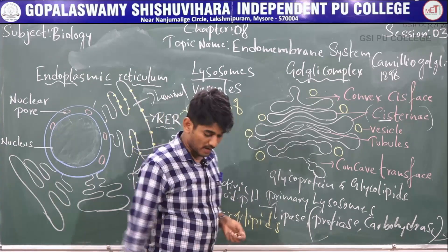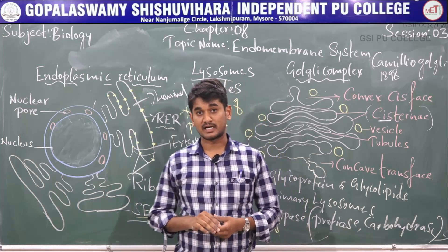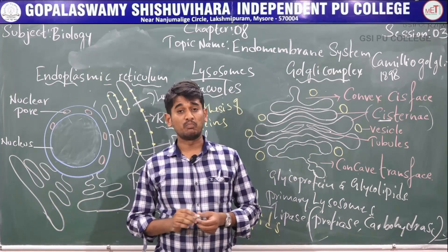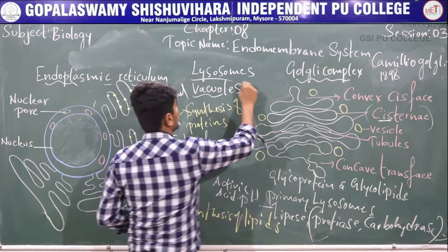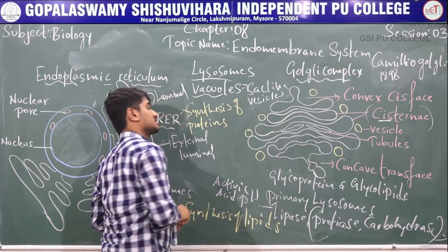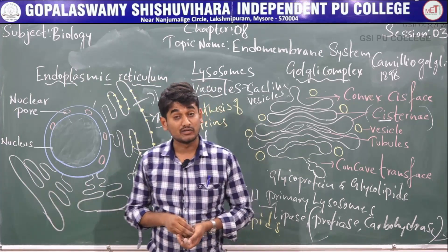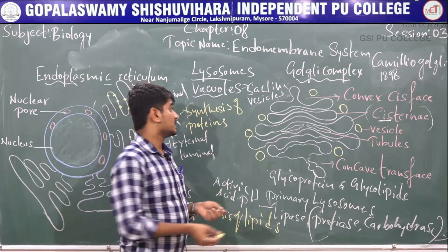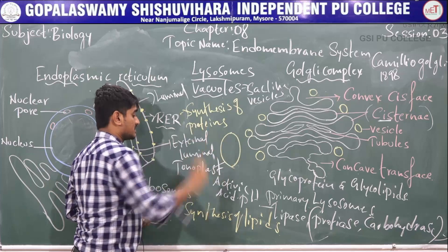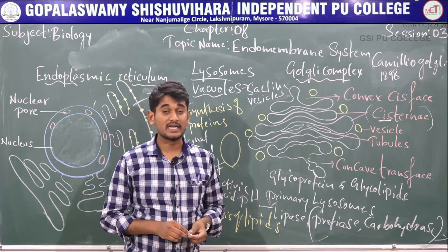The next one is vacuoles. We already know about vacuoles from our discussion on differences between plant and animal cells, including the central large vacuole in plant cells. Vacuoles are membrane-bound sac-like vesicles present in plant cells. They store water, cell sap, excretory products, and other molecules not used by the cell. These vacuoles are covered by a membrane called the tonoplast, which facilitates transport of ions and other molecules against the concentration gradient into the vacuole.